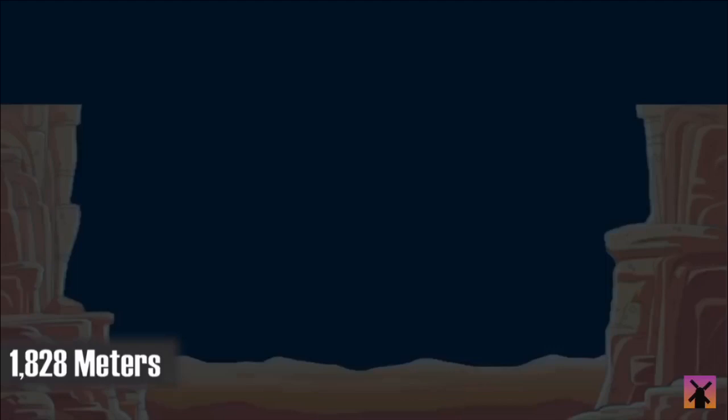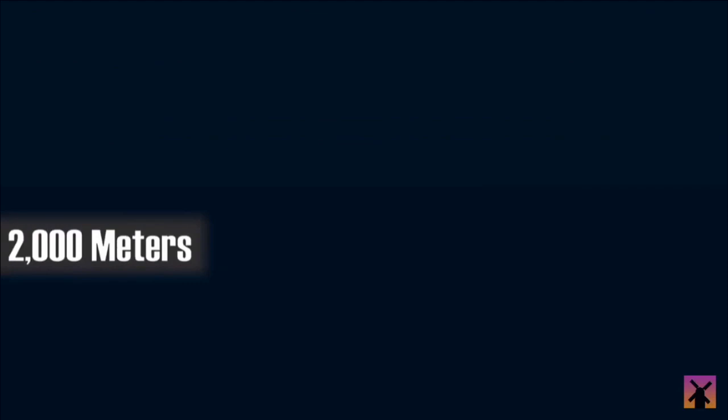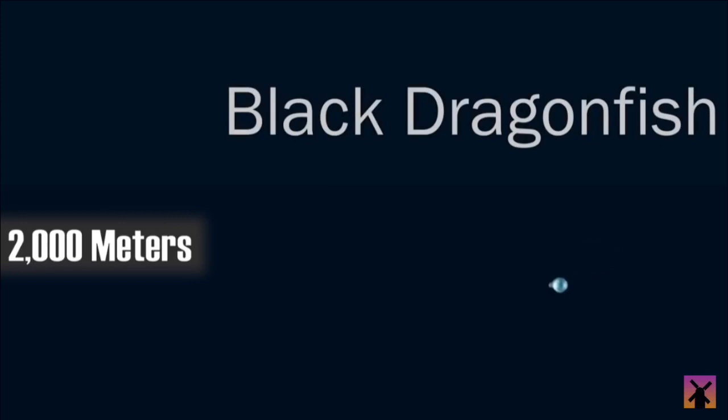Down at 2000 meters, we start to encounter some of the more terrifying sea creatures, like the ominously named Black Dragonfish, a carnivorous beast with a stomach that doesn't allow light to be emitted through it. Meaning that since we're in total darkness underwater at this point, the only way you would ever see this thing is with a flashlight.